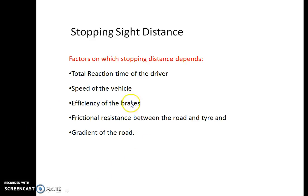Speed of the vehicle: if the initial speed is high, obviously it requires more distance to stop. Efficiency of the brake: if you maintain brakes in good condition, the vehicle will stop in a shorter distance. Frictional resistance between the tyre and road surface also affects stopping distance. Gradient of the road — whether it is an up-gradient or down-gradient — affects the stopping sight distance calculation.